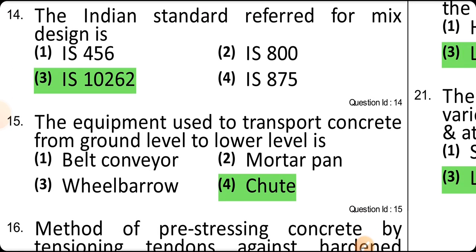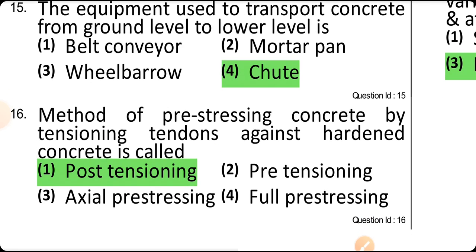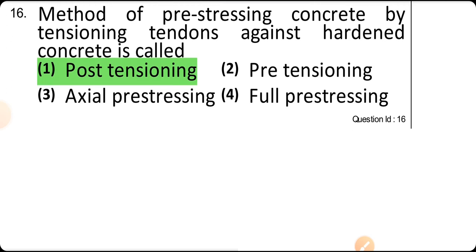The equipment used to transport concrete from ground level to a lower level is called a chute. The method of pre-stressing concrete by tensioning tendons against hardened concrete is called post-tensioning.